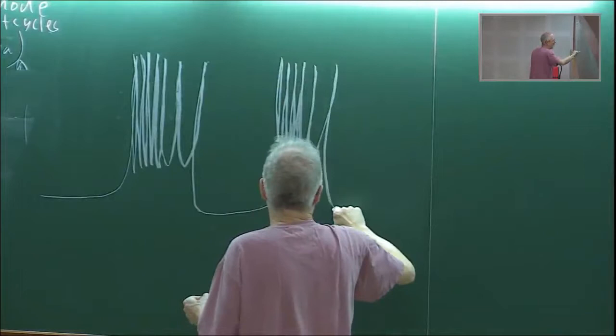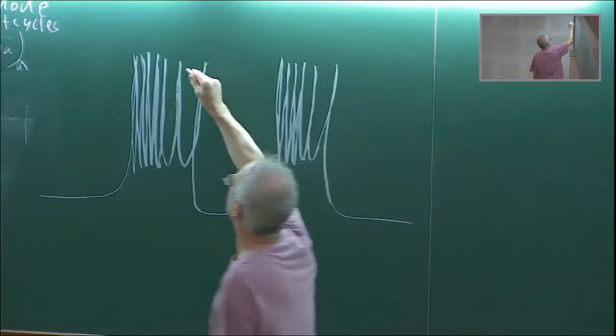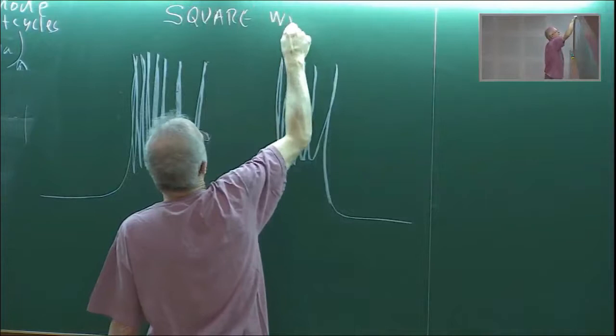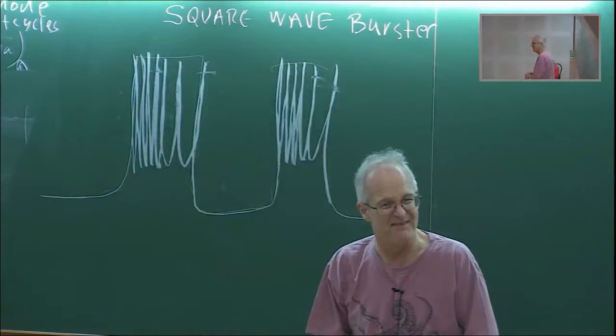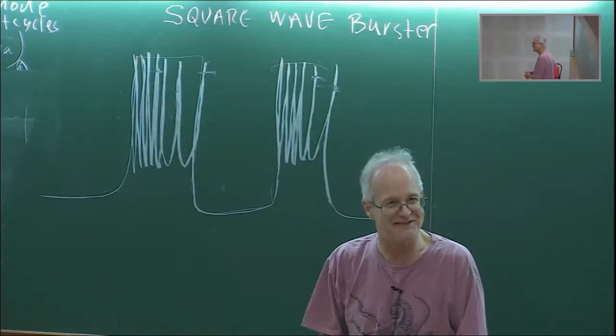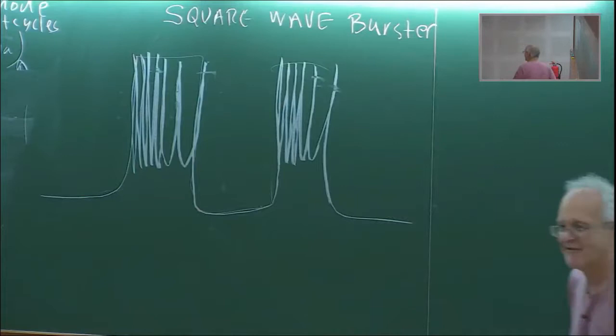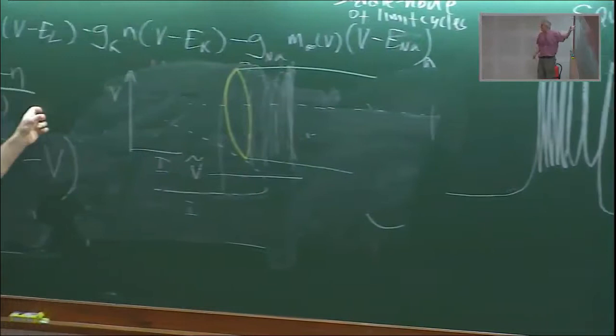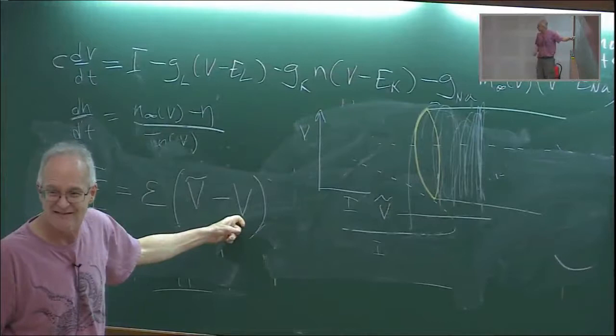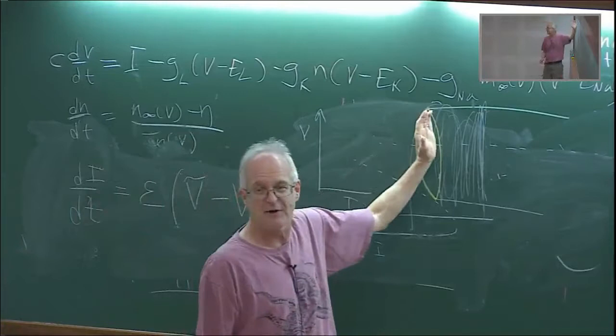This is called a square wave burst — or you could call it a Bart Simpson burst if you know who Bart Simpson is. This is square wave bursting, and you can think of it as the transition in the Morris-Lecar equation, or any kind of model like this, where you've got bistability via a homoclinic bifurcation.